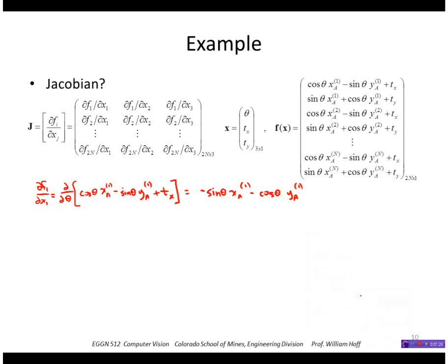Just filling in the other ones, the derivative of f1 with respect to x2 would just be equal to 1 because that's just tx. So I would get for the Jacobian.